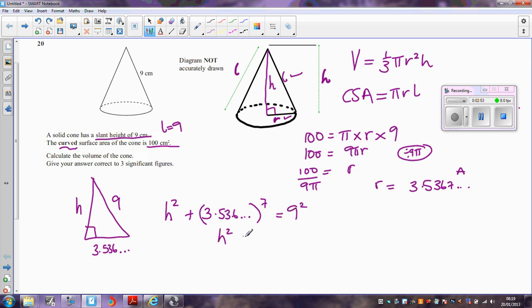In other words, h squared is going to be 9 squared minus the saved 3.536 squared. Sorry, that should be a 2. And if we work that out, it comes out as 68.4912. That's h squared, remember.